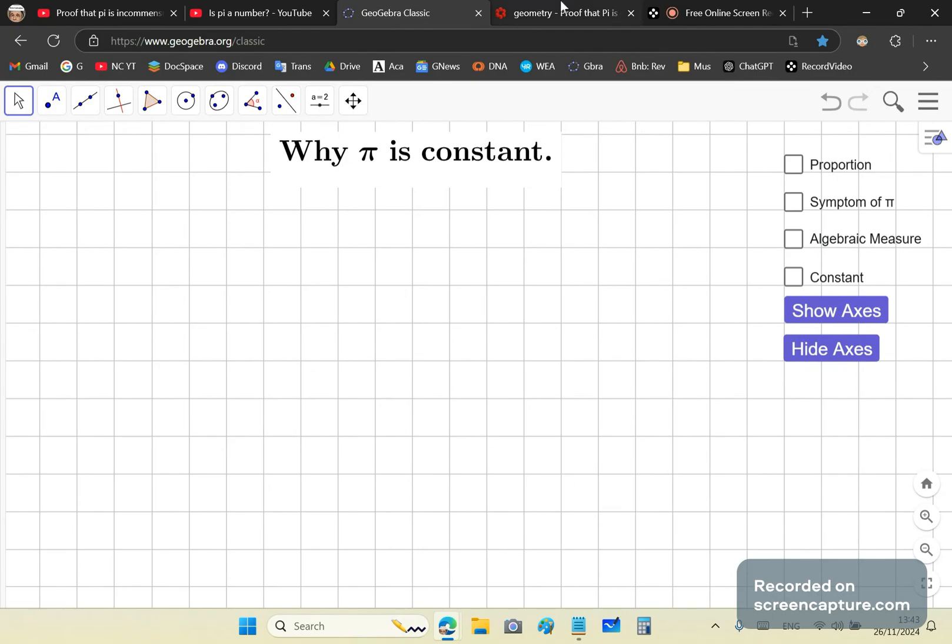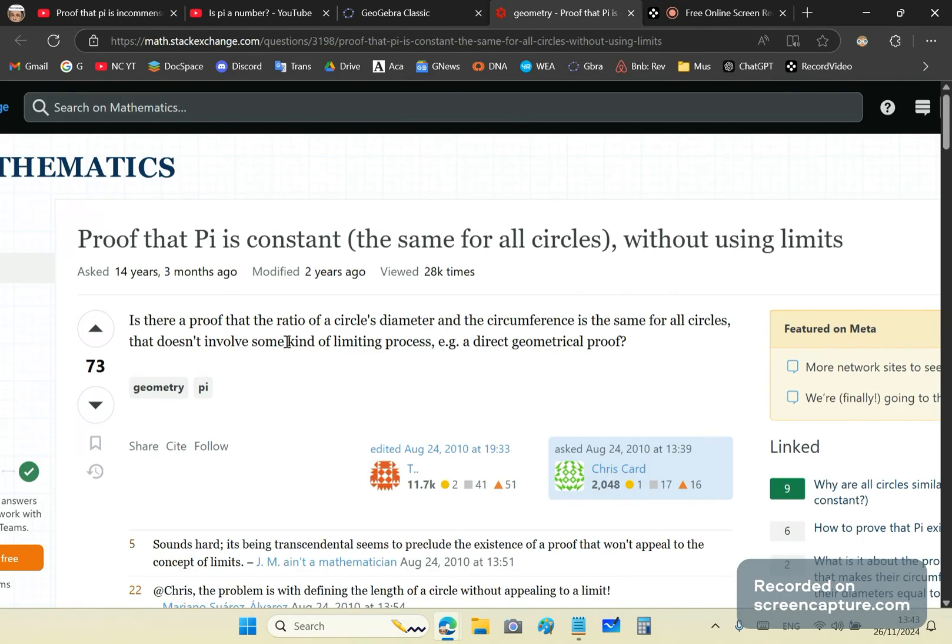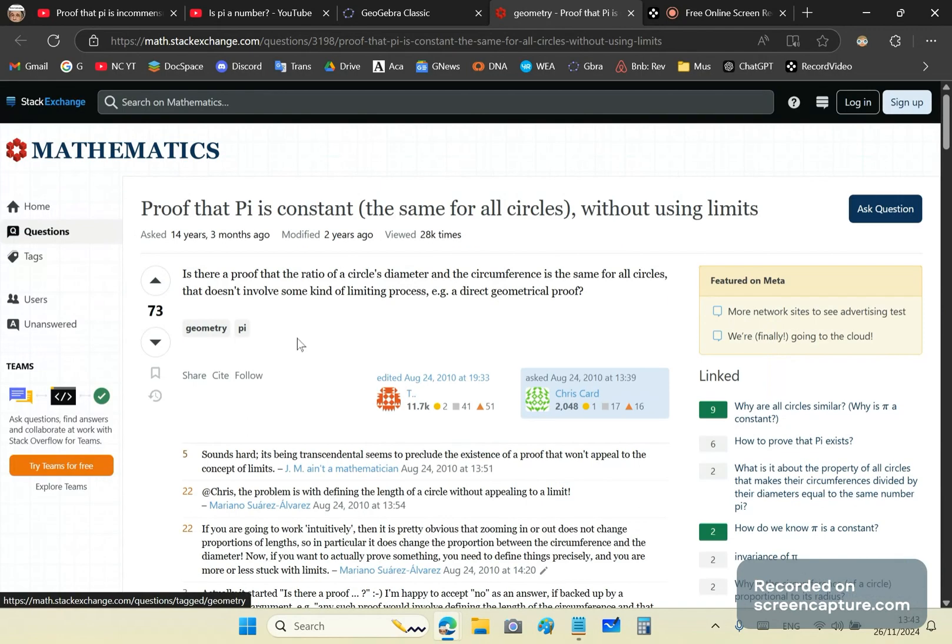So if you look at mainstream sites, they're all morons by the way, and look what this question is about. It says proof that pi is constant without using limits. Well, of course you don't have to use limits at all and the ancient Greeks didn't use limits.